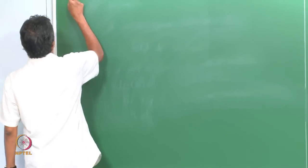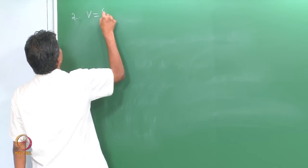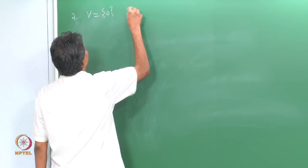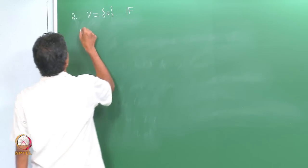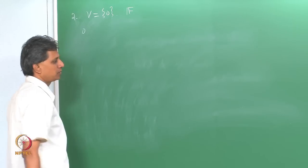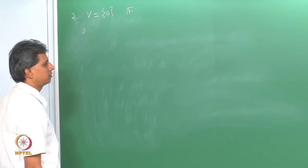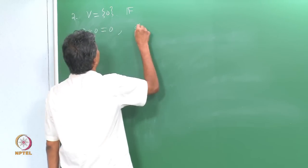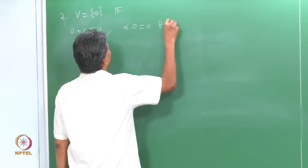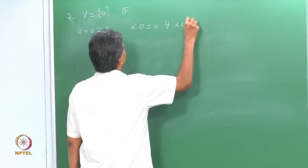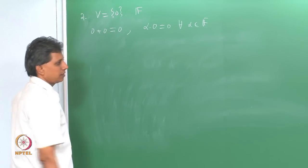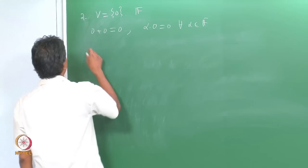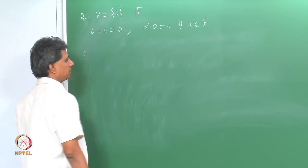A second trivial example: take V = {0} and F as any field. Define vector addition and scalar multiplication as α·0 = 0 for all α in F. Then V over F is a vector space. These are trivial examples.